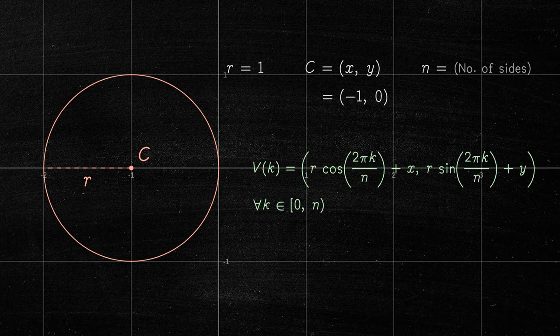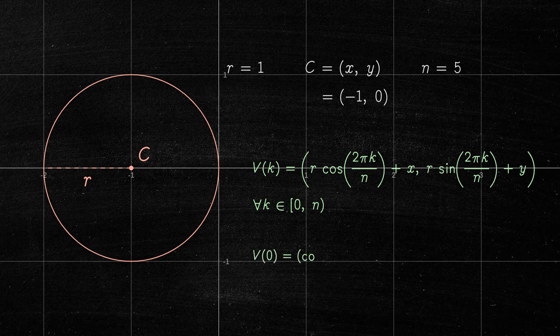For example, let's say we want to draw a pentagon. The first vertex would be at k equals 0.